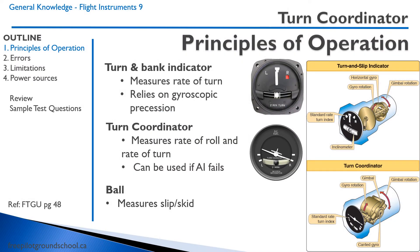Let's talk about some principles of operation. The top instrument is what's called the turn and bank indicator, and it measures the rate of turn — the number of degrees we're turning per second. It relies on the principle of gyroscopic precession. If we look to the right, how it looks on the inside, we see a gyroscope mounted with the axes parallel to the lateral axes of the aircraft.